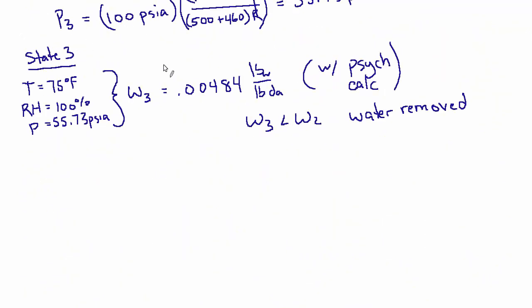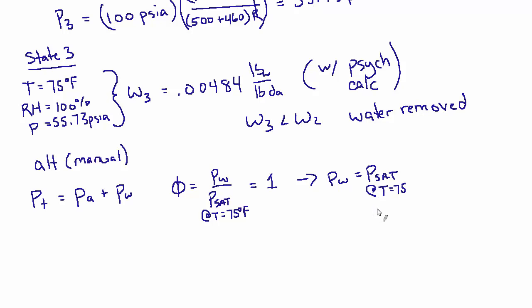But regardless, let's look at a manual alternative now, very similar to what we did in the previous part, where we find the humidity ratio for state three without using a psychrometric calculator. So again, we're going to want to get the partial pressures. So let's say the total pressure equals the partial pressure of the air plus the partial pressure of the water vapor. And the humidity is the partial pressure of water vapor divided by PSAT at the temperature, which in this case is 75 degrees Fahrenheit. Well, we know the relative humidity is 100%. So this ratio equals one. So that means then that the partial pressure of water vapor equals the saturation pressure at that temperature because the air is saturated.